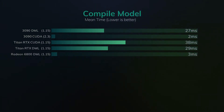For compiling the model, the 3090 CUDA and Radeon 6800 are the best at two and three milliseconds respectively, while the Titan RTX is again lagging behind. I believe this is because these are CPU-intensive operations. Interestingly, the Titan RTX machine and the Radeon machine share the same CPU — a Ryzen 7 3800X — while the 3090 machine has the 3700X, a slightly lower-tier version.